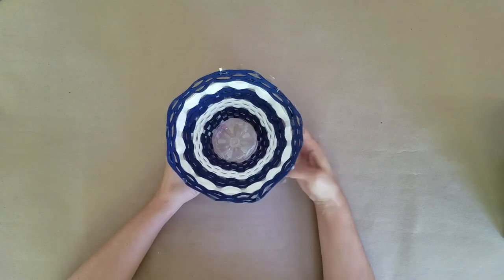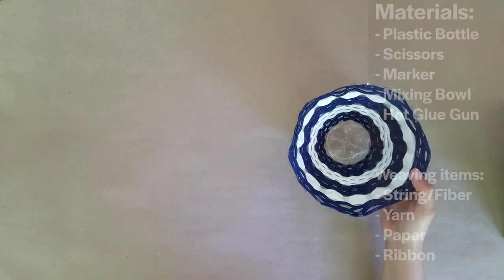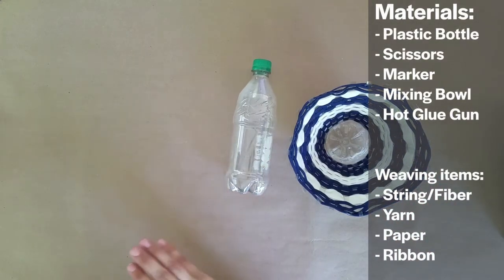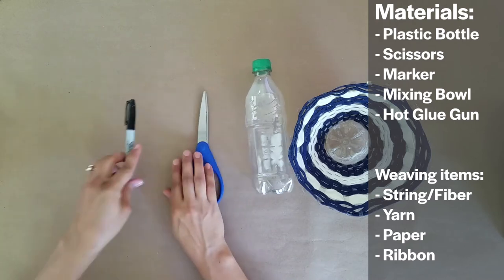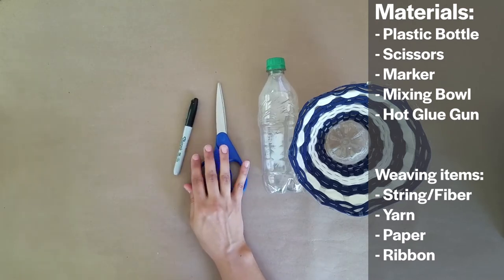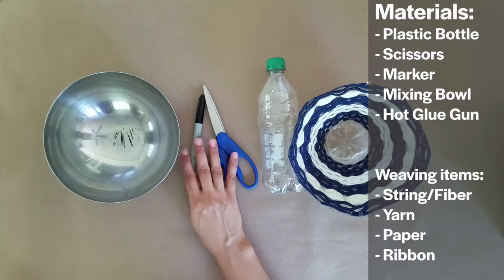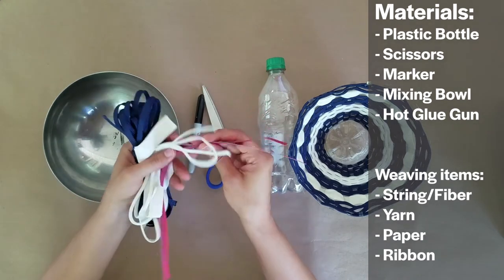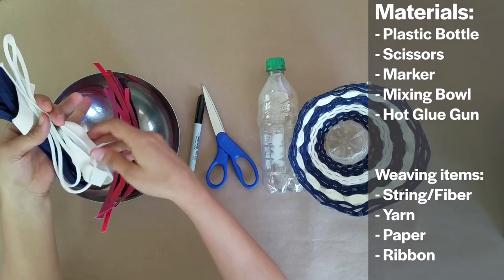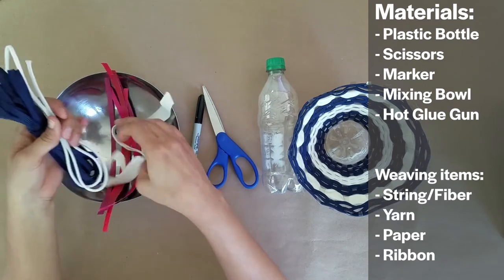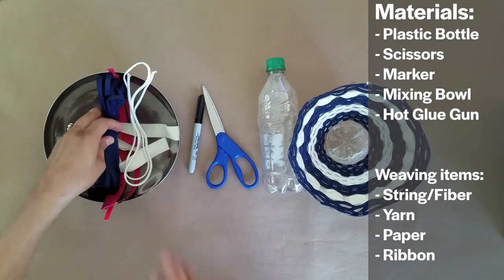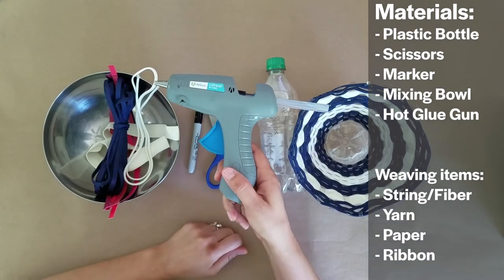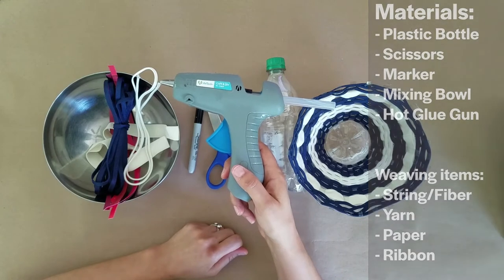Here are the materials that you'll need today. You'll start with a plastic bottle. You'll need scissors, a marker, a mixing bowl, and then materials to weave into your plastic. So this can be small strips of paper, ribbon, yarn, fiber, whatever you have at home. You'll also need a glue gun to attach the ends of your fibers or ribbon together.